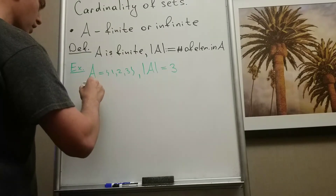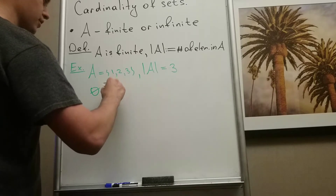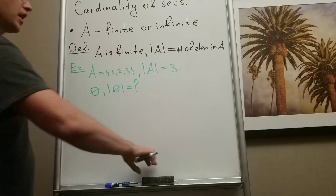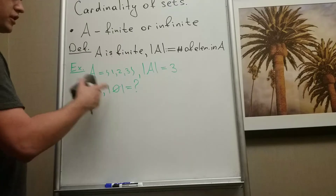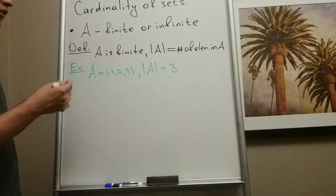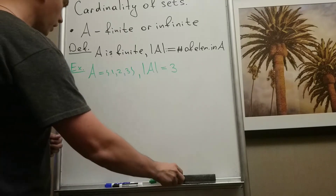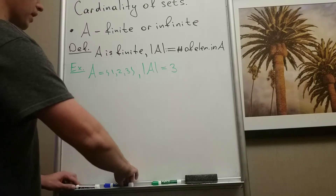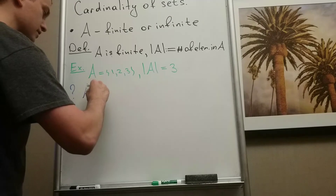Another interesting example — maybe it's a small proposition we can prove — is: if we have the empty set, what is the cardinality of the empty set? That's a good question, and we can think about how to prove the answer. So if A is finite, cardinality is really simple: it's just the number of elements, we just count them. But what about when A is infinite?